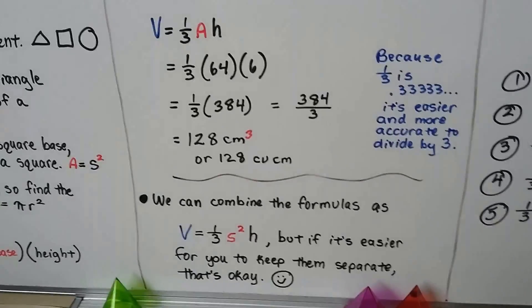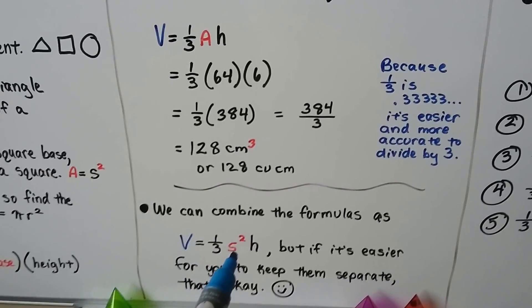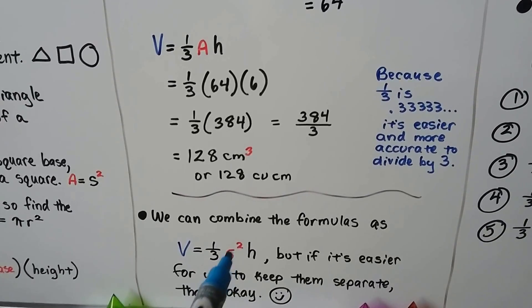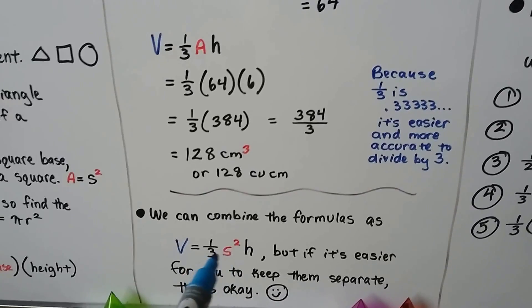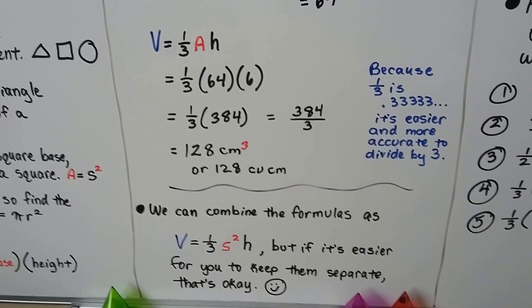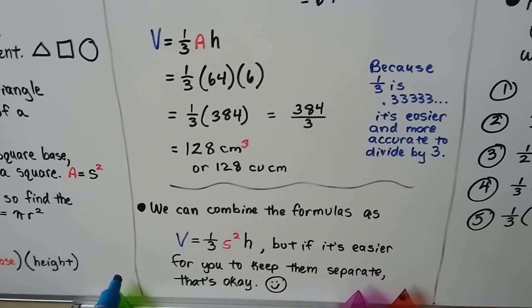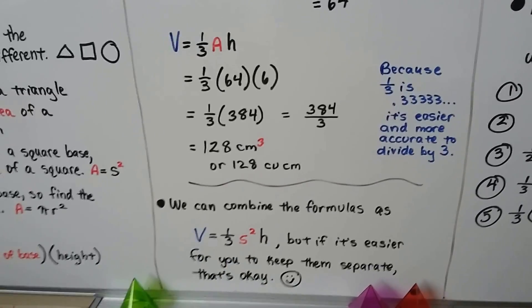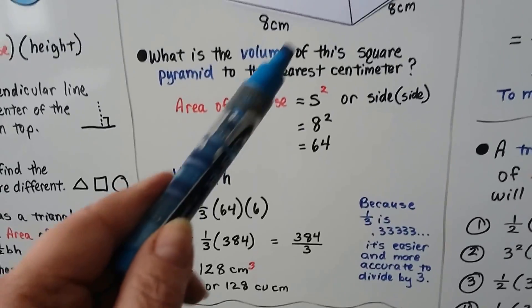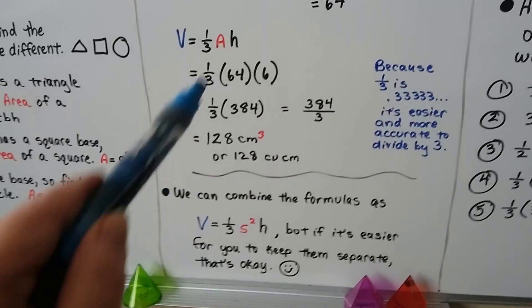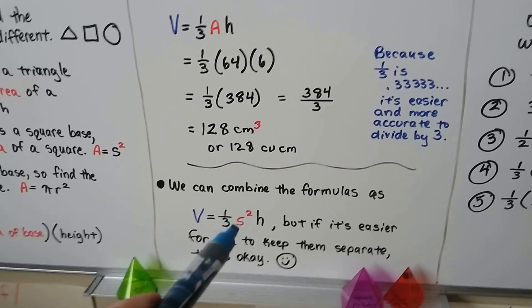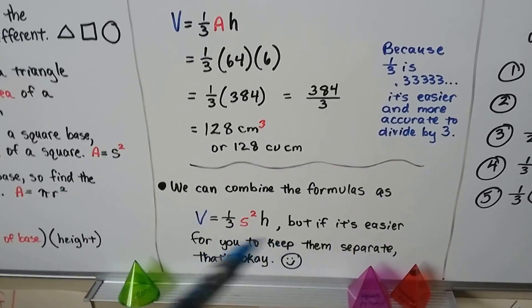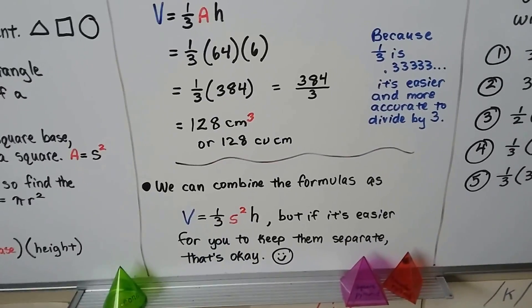Now we can combine these formulas. Instead of putting an a here, because the area of the base of a square pyramid is s squared, we could put that in to this formula. And if it's easier for you to keep it separate, then keep it separate. But if it asks you which formula would solve this problem, know in your heart that instead of a, you could put the s squared there, because that's area of the base of a square pyramid. Or whatever the area of the base formula would be.